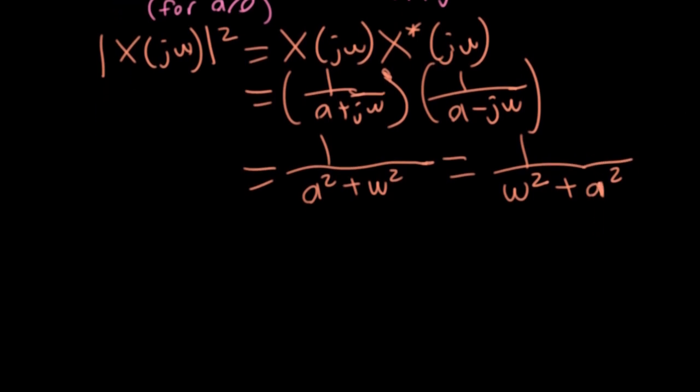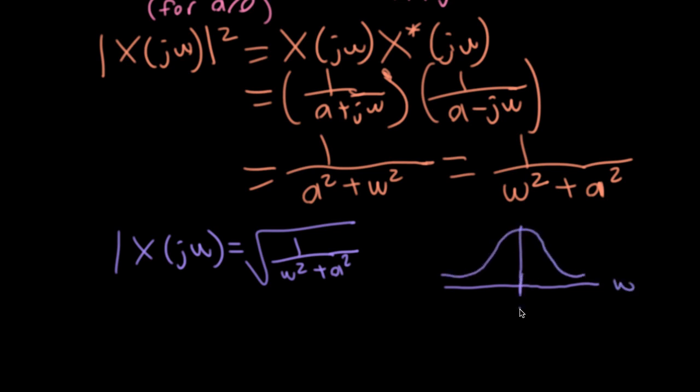All right, so we've figured out that the magnitude of big X of j omega is equal to the square root of one over omega squared plus a squared. If you want to plot this, it winds up looking something like this. Imagine that's symmetric. This is called a Lorentz function.